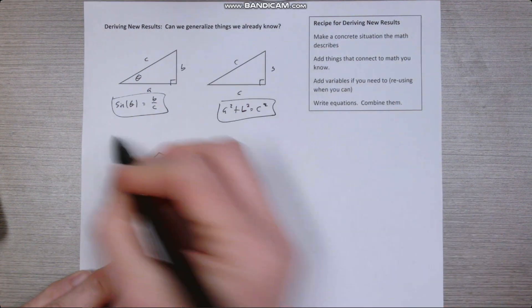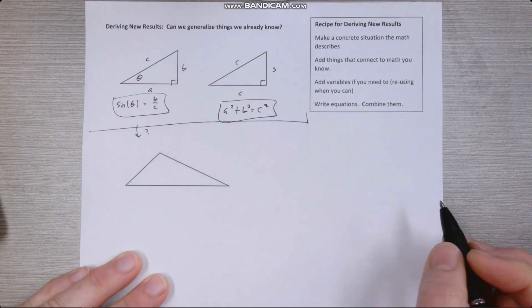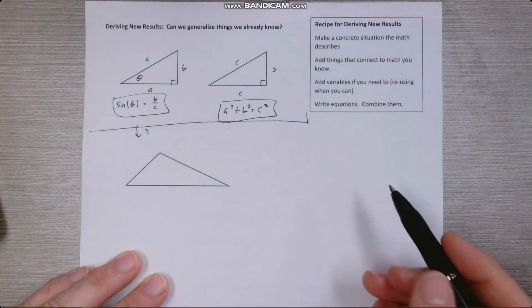But the problem is these useful facts only apply to right triangles. What happens if we have a triangle that isn't right? So the angles don't necessarily have a right angle in them.